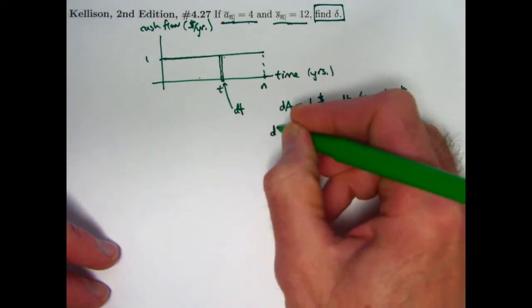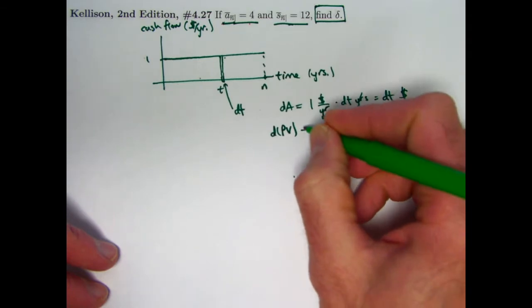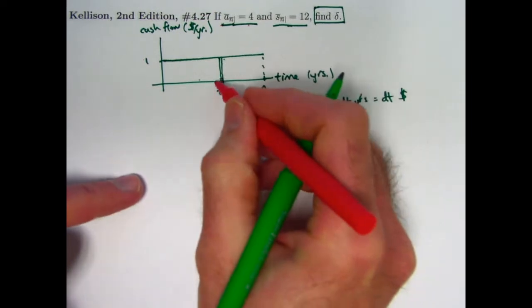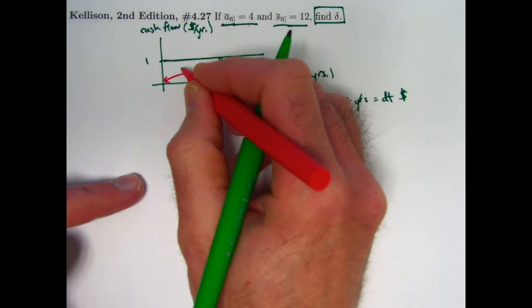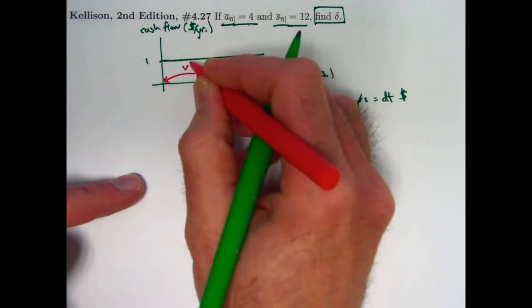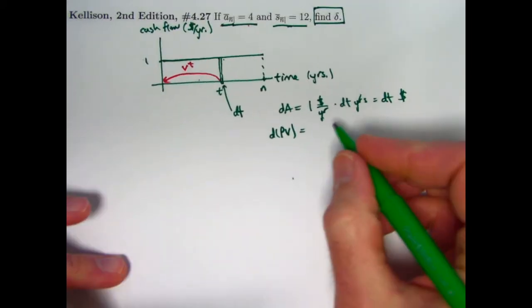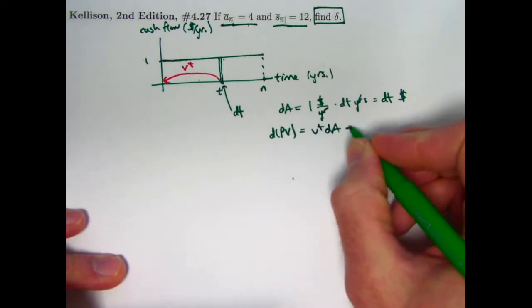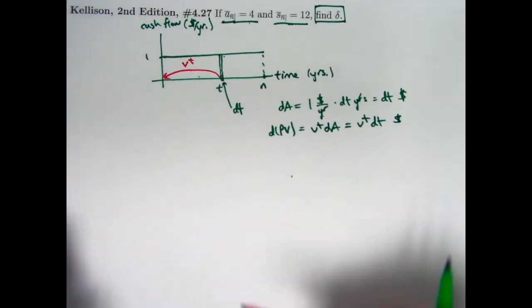What's the tiny present value, dpv, of such a tiny amount of money at time t? We would need to discount it back in time to time zero, present value at time zero. Use the present value discount factor v and raise it to the amount of time t power there. So dpv is going to be v to the t dA, which is the same thing as v to the t dt, and this would be in dollars. I used that in the last video.